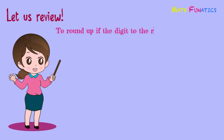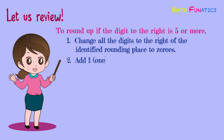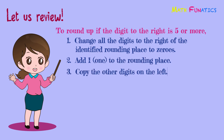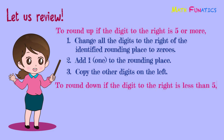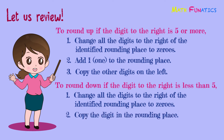To round up if the digit to the right is 5 or more: first, change all the digits to the right of the identified rounding place to zeros; next, add 1 to the digit in the rounding place; finally, copy the other digits on the left.